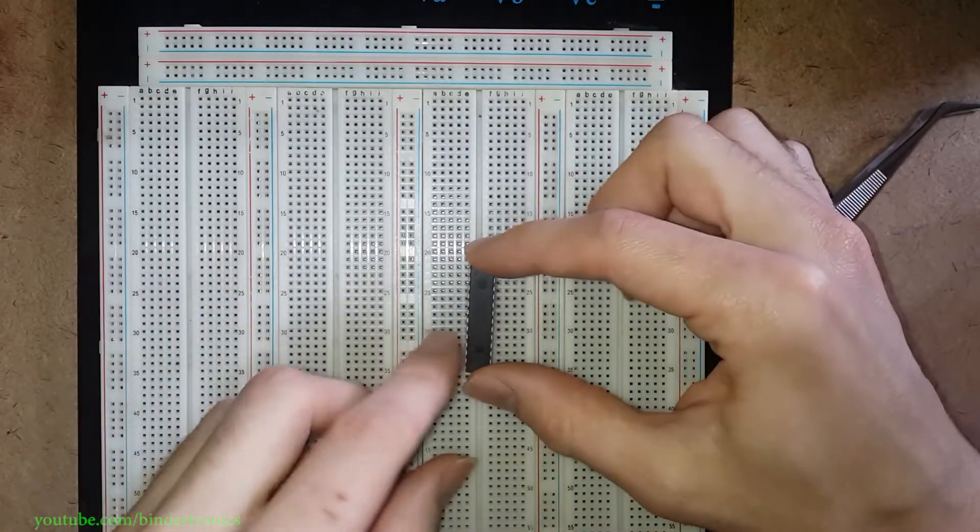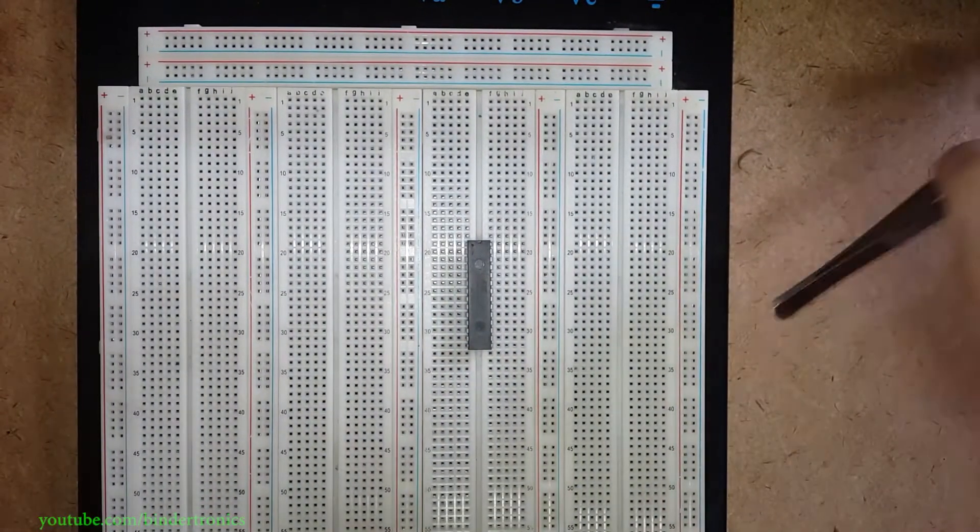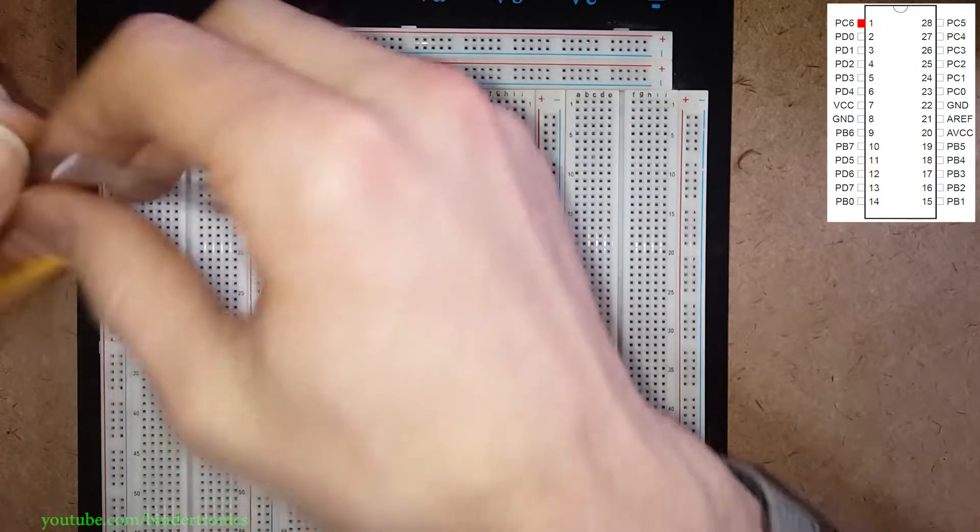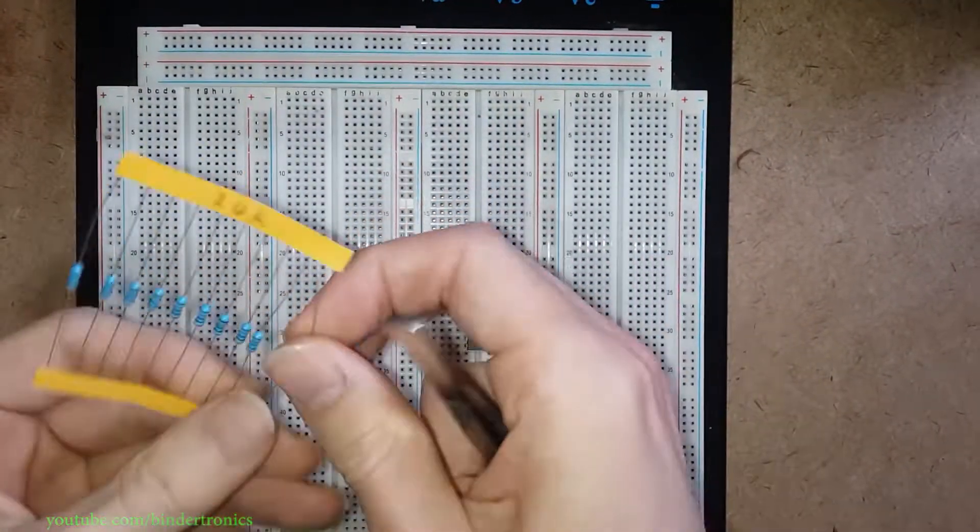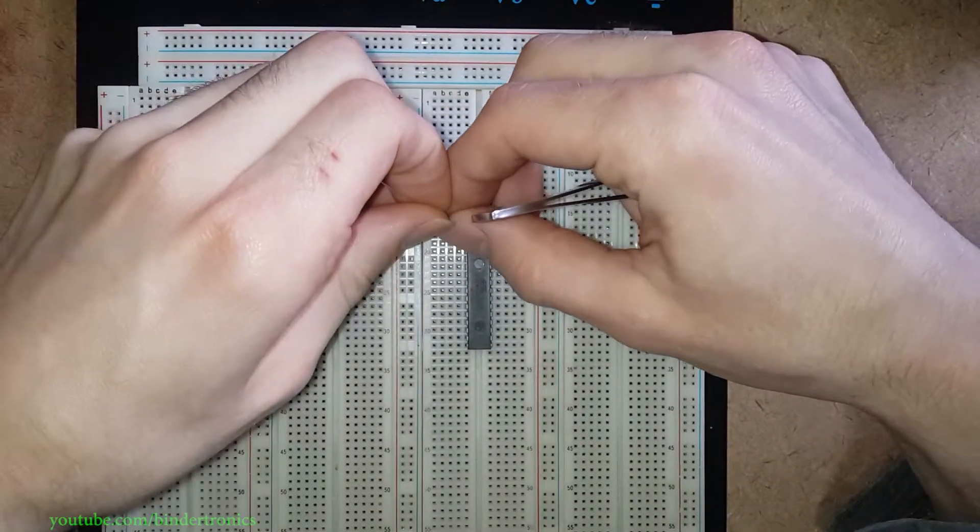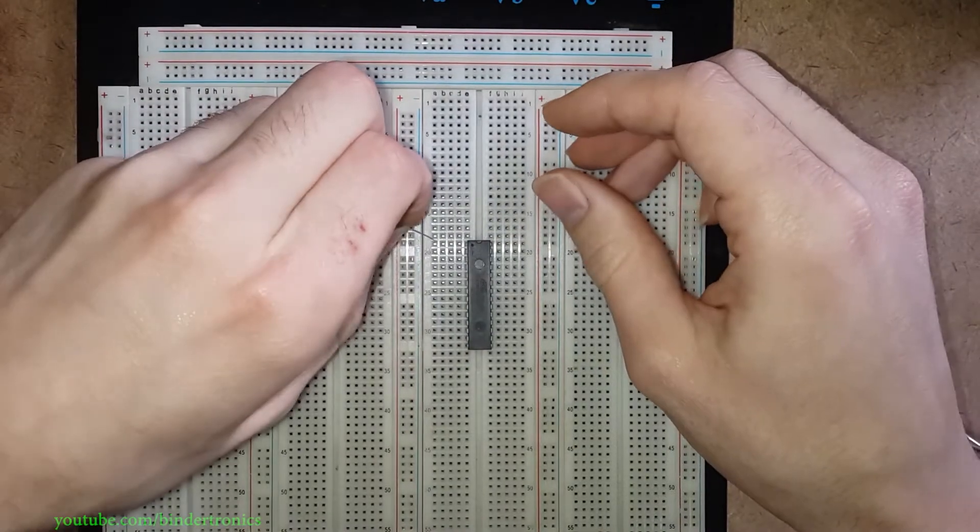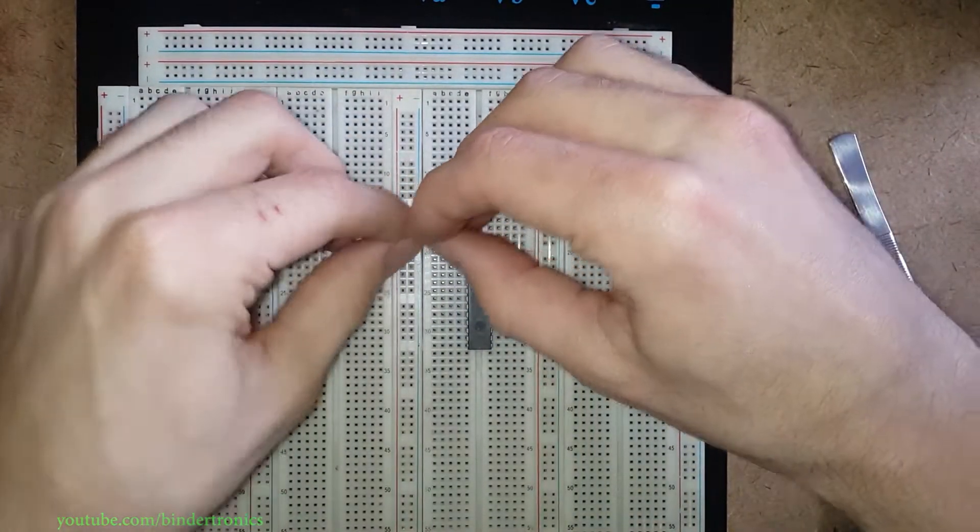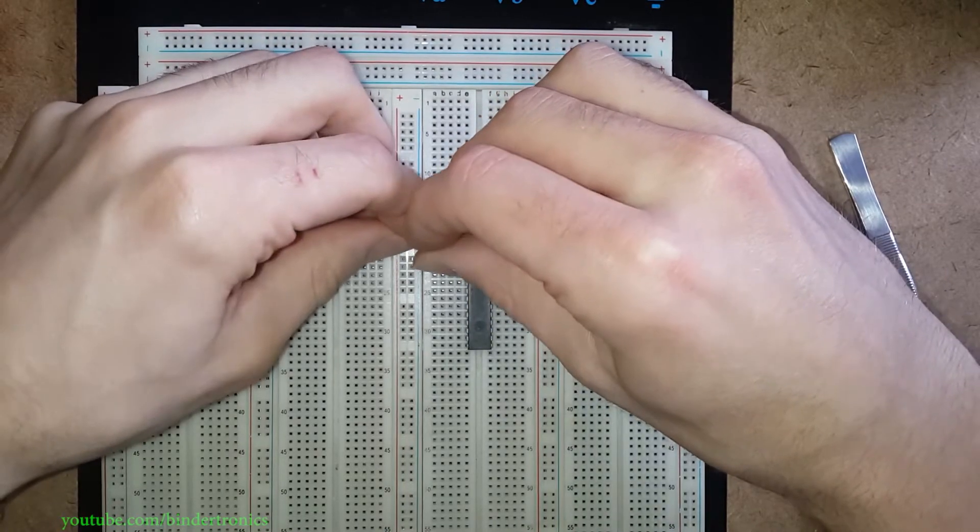Okay now I'm going to insert it into the breadboard. Now the next piece of hardware we are going to need is a 10k resistor. Then the 10k resistor I'm going to measure out about where I can insert it into the VCC line.